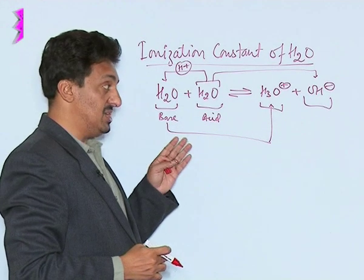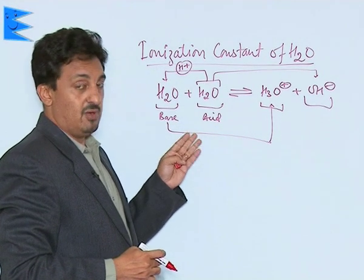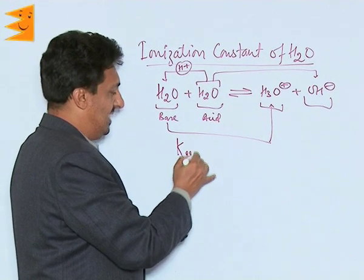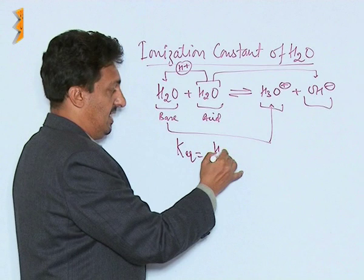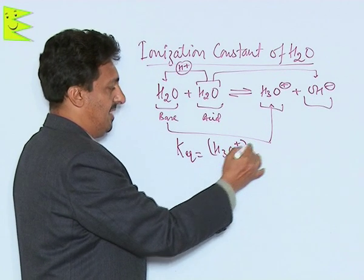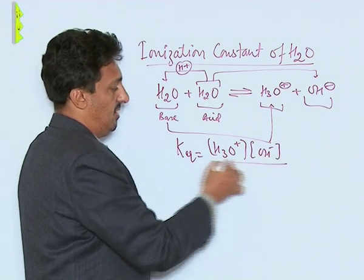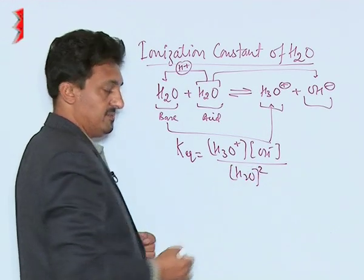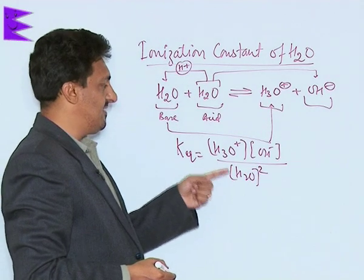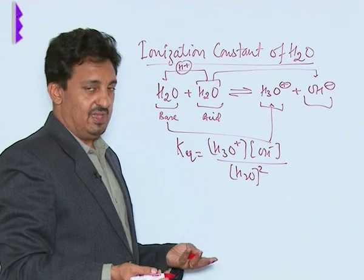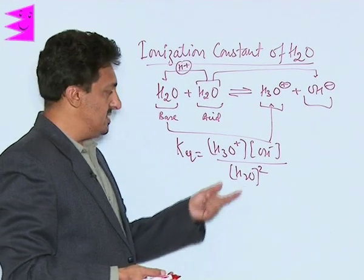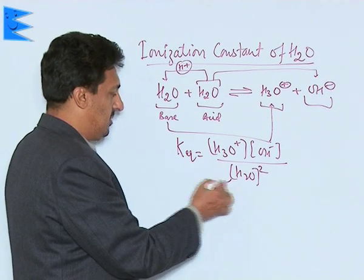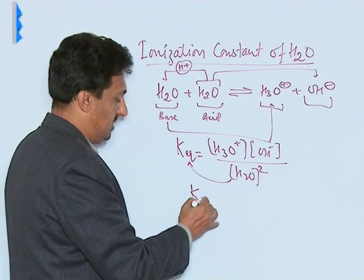Now can we find out the dissociation constant or equilibrium constant for this? Yes. If we write it like this, we can have the hydronium ion concentration, the hydroxyl ion concentration, and the water concentration squared. Since the concentration of water is not going to change — being the solvent — it can be incorporated into the equilibrium constant, and on doing so, this becomes Kw.